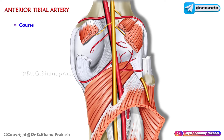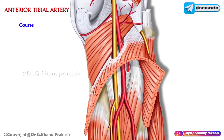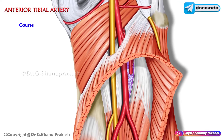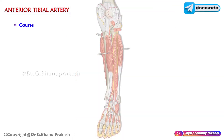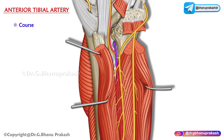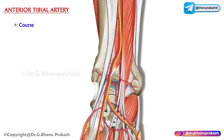Regarding its course, it begins in the back of the leg at the lower border of the popliteus. It then enters the anterior compartment of the leg by passing forwards between the two heads of tibialis posterior through an opening in the upper part of the interosseous membrane.